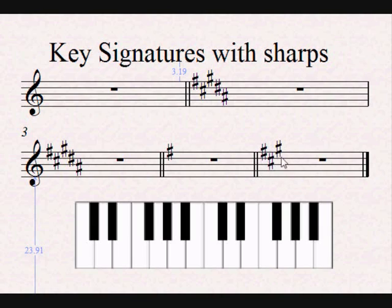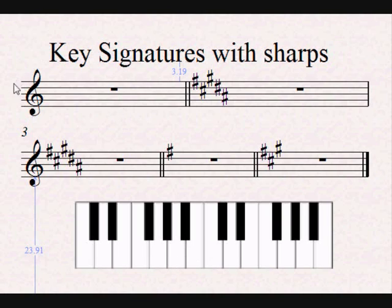So this is written in A major or F sharp minor. In this particular case, if we don't have any sharps at all, that means whatever it is is written in C major or the relative minor of C major — 1, 2, 3, 4 — A minor. So this is written either in C major or A minor.